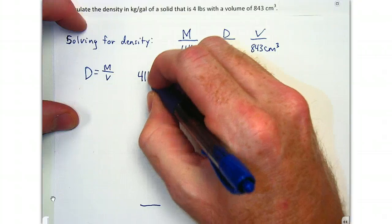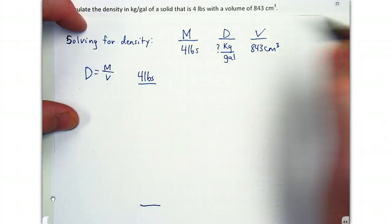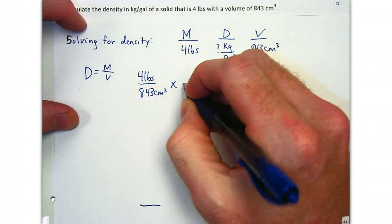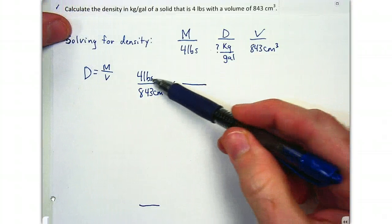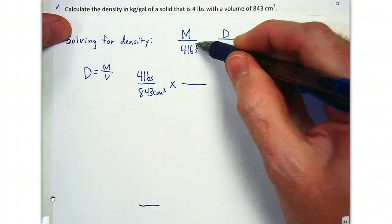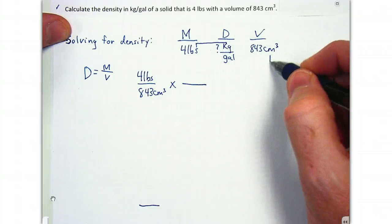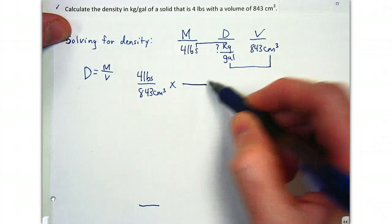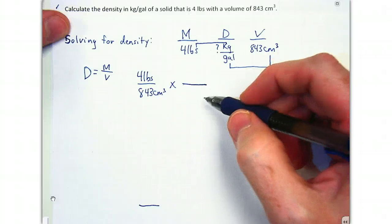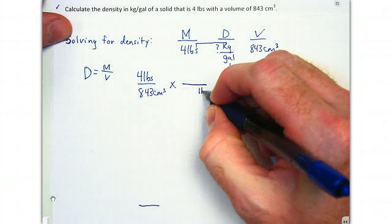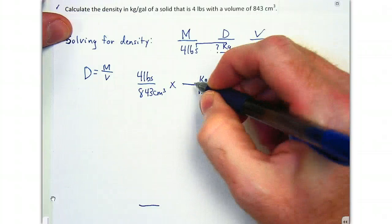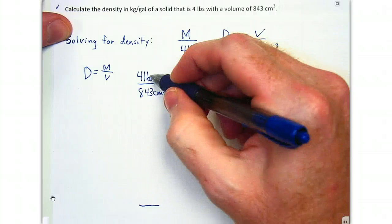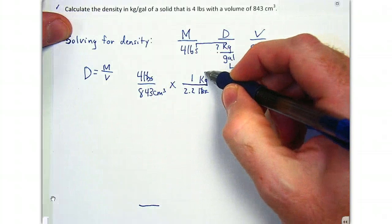We have mass of four pounds over volume of 843 cubic centimeters. We need to convert pounds to kilograms. We bring down our pounds and convert to kilograms: one kilogram is equivalent to 2.2 pounds. The pounds cancel and now we're at kilograms, so we have our mass.